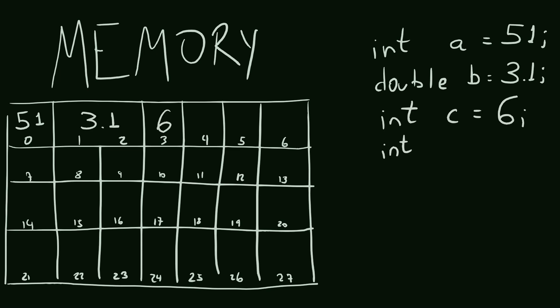When we create a pointer variable, instead of storing the actual value we have inside the locker, for example 6 in this case, we are storing the number of the locker that the value is stored in.